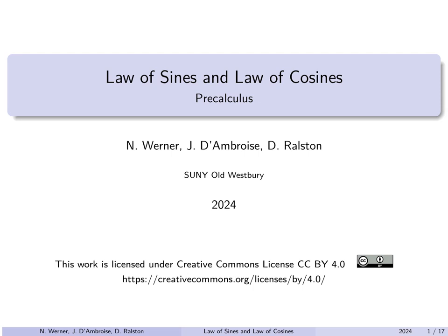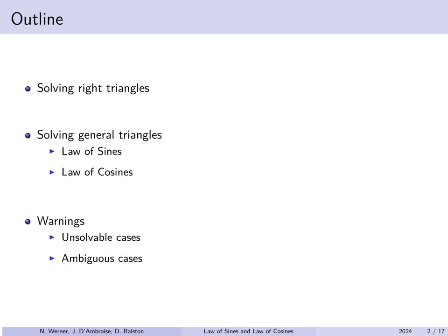Hello. In this lecture, we'll cover the law of sines and the law of cosines. We'll begin with the discussion of solving right triangles. Solving a triangle refers to finding all of the angles and all of the sides. Solving right triangles boils down to basic trigonometry, inverse trigonometry, and the Pythagorean theorem. For general triangles that are not right triangles, we will need to introduce the law of sines and the law of cosines. We will work through several examples, but we will conclude with a few warnings regarding solvable or ambiguous cases where you need to be careful in applying these two laws.